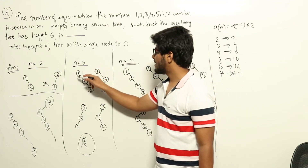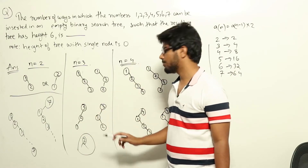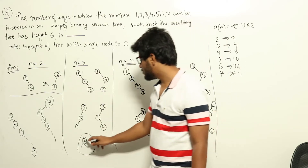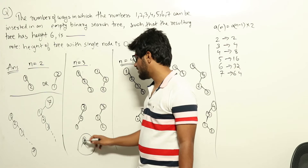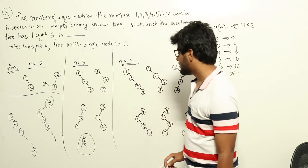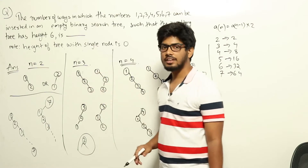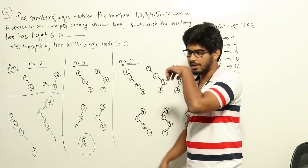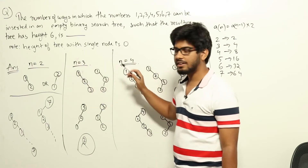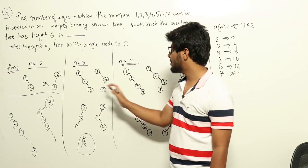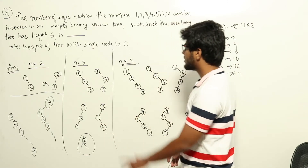For n=3, the valid orderings are: 1,2,3 or 1,3,2 or 3,2,1 or 3,1,2. If we add 2 first as the root, then 1 goes to the left and 3 to the right, so the root has two children — that's not a chain. So the answer for n=3 is 4. A key pattern: the first number inserted must be either 1 or n; any middle value would create two subtrees.